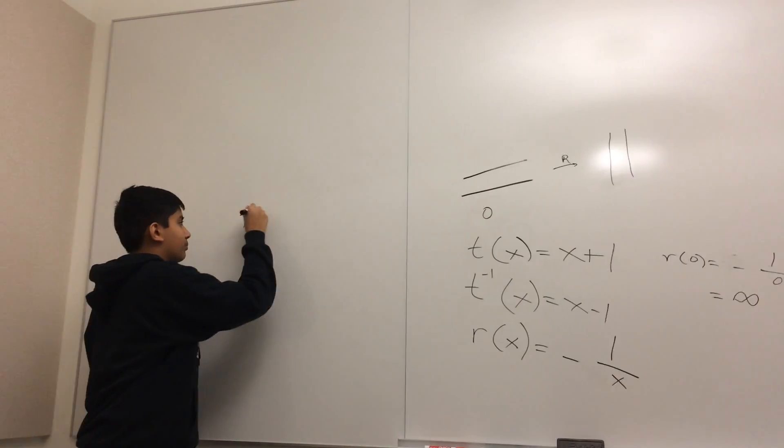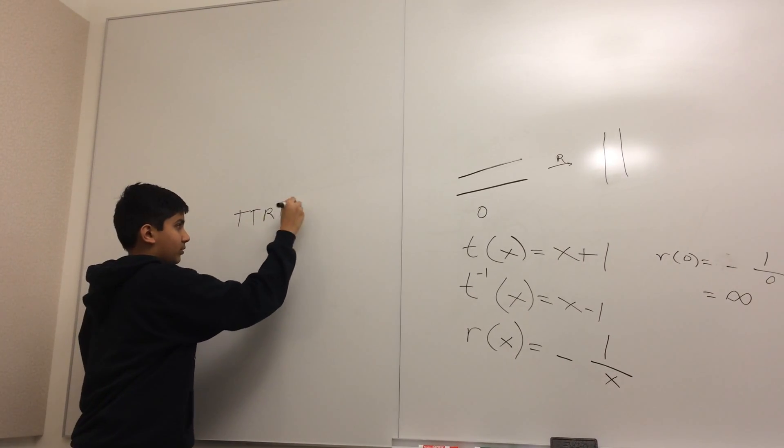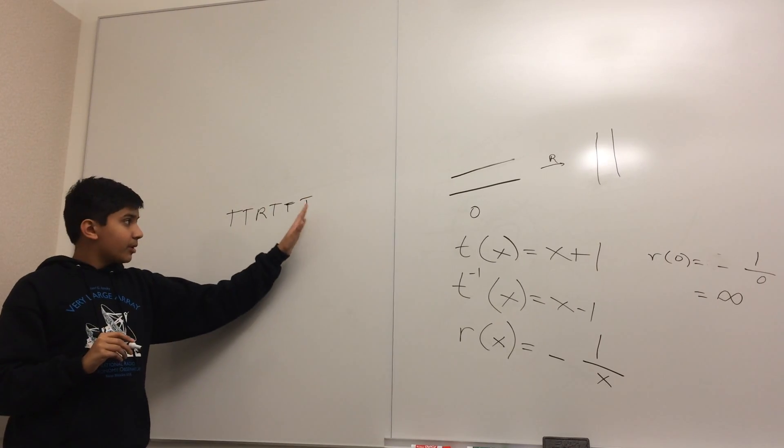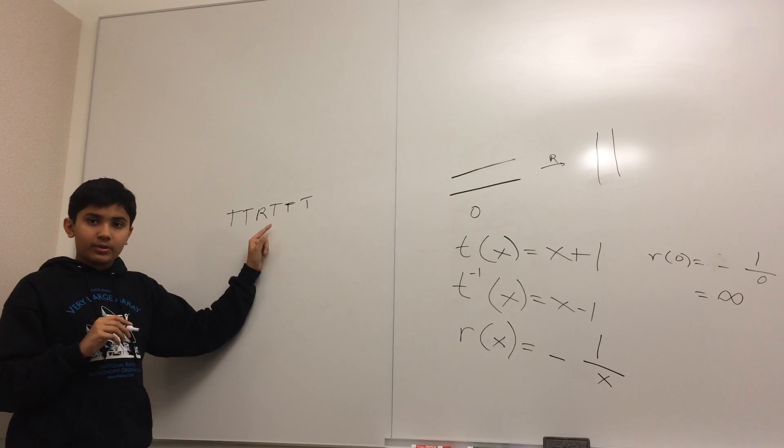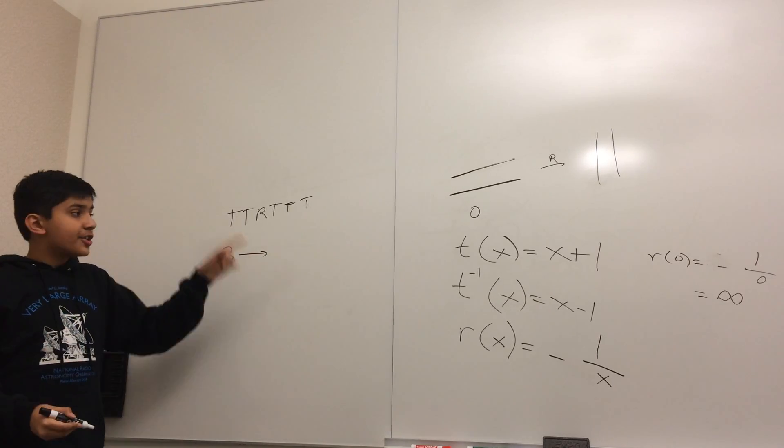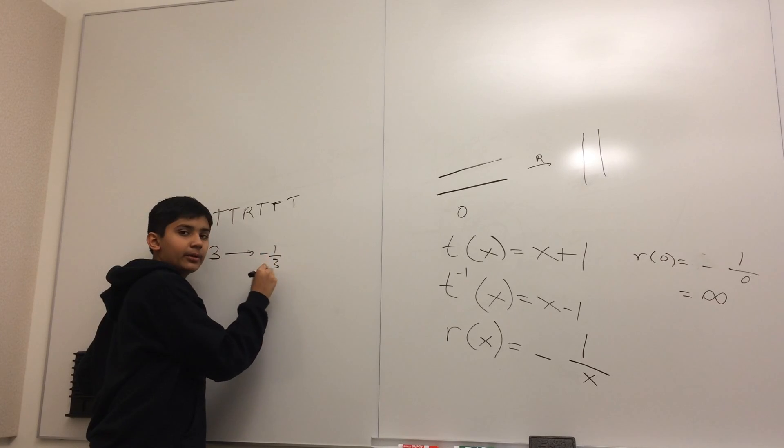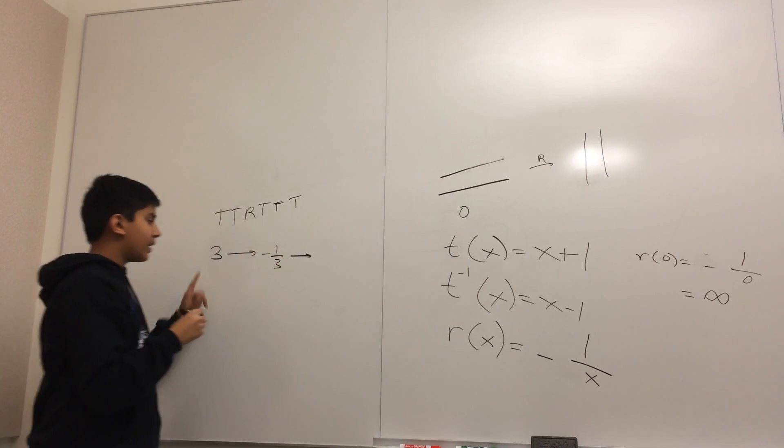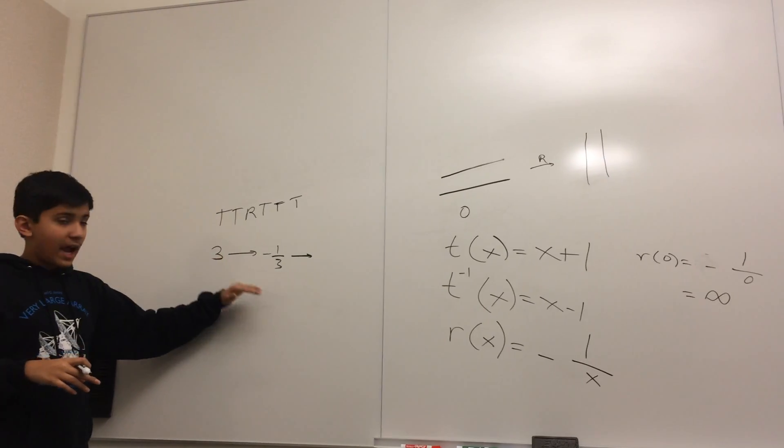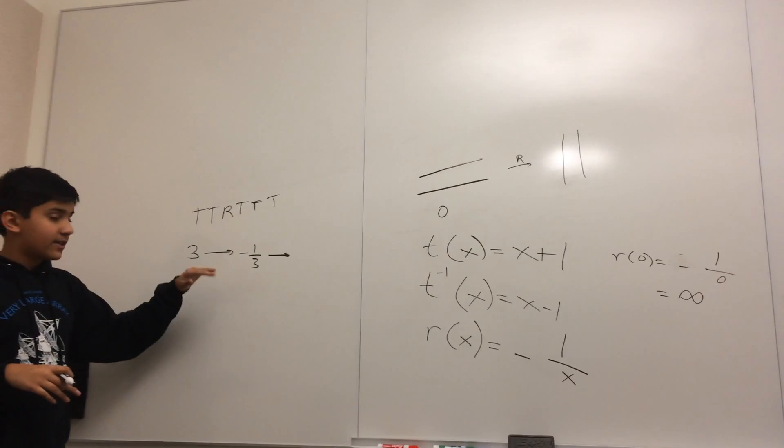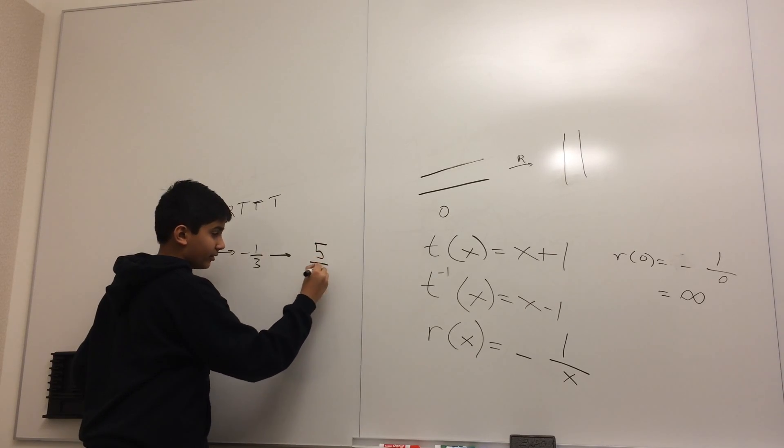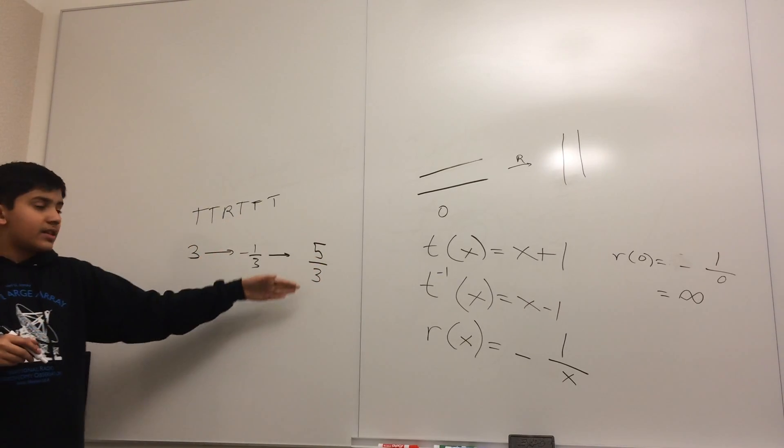Let's calculate the number for this rational tangle. We start with zero, then we apply t three times, so we add 1, add 1, add 1. Now we're at 3. Now we're going to apply r once. r is minus 1 over x, so this takes us to minus 1 by 3. Now again, we apply t two times, and t twice adds 2 to this. Adding 2 once is 2 thirds, adding 1 again is 5 thirds. Thus, this rational tangle has number 5 thirds.